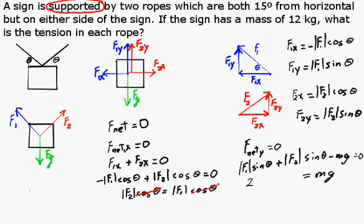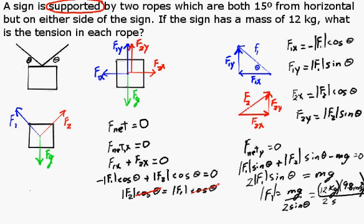Since F1 is equal to F2, 2F1 sine theta is equal to Mg, and we can determine F1 to be 227 newtons.